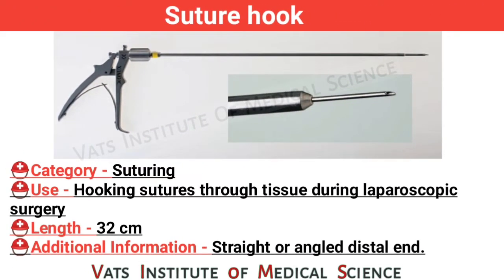Suture hook. Category: suturing. Use: hooking suture through tissue during laparoscopic surgery. Length: 32 cm. Additional information: straight or angled distal end.